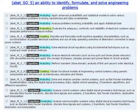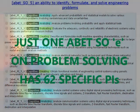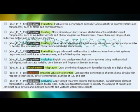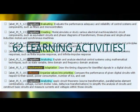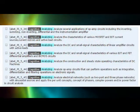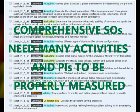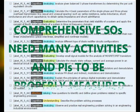ABET SOE on problem solving for the EE program constitutes 62 learning activities corresponding to Bloom's three learning domains and their learning levels. Can a few generic PIs accurately and comprehensively measure these ABET SOs? Comprehensive SOs need many activities and PIs to be properly measured.